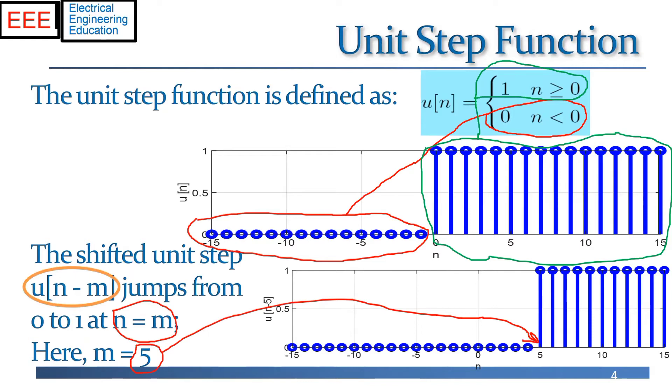So shifted unit steps are useful. And multiplying unit steps by a signal is handy, because it zeroes out the entries in the signal for time indices n less than m, just to see this with an example.